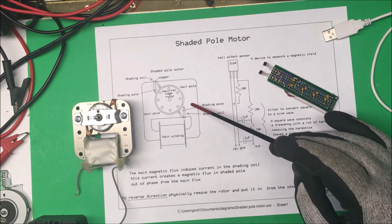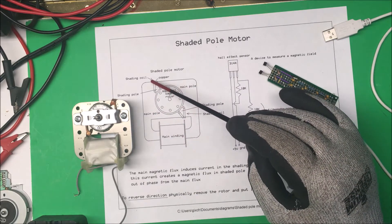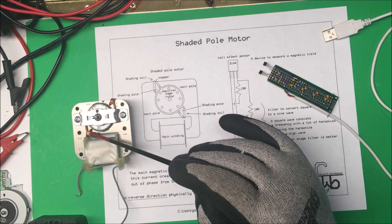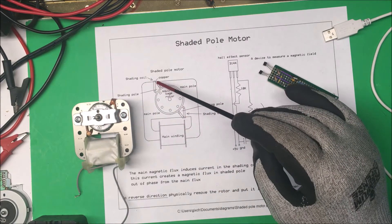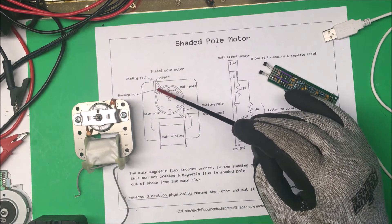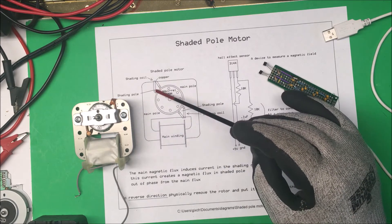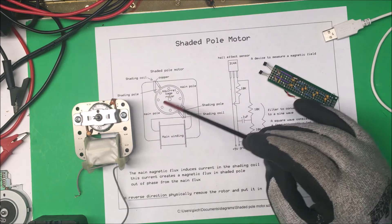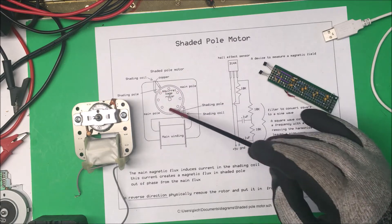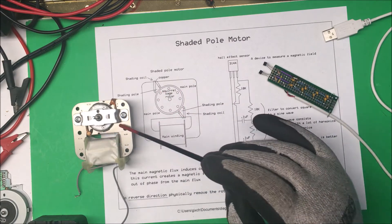field in this armature here. That field creates a current in these shading coils - here and here - just pieces of copper. That current creates a magnetic flux in the shading pole, which is 90 degrees out of phase with the main pole. That's what creates your rotational torque. Now, this rotor is aluminum